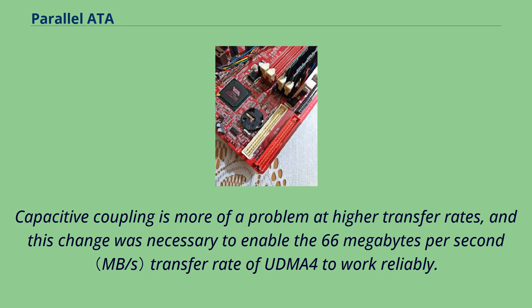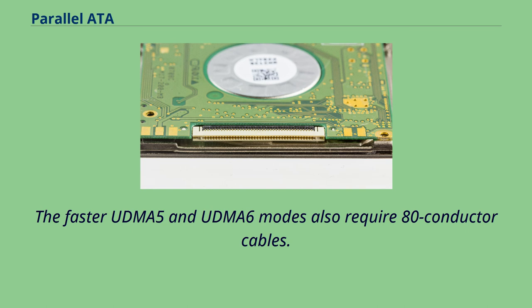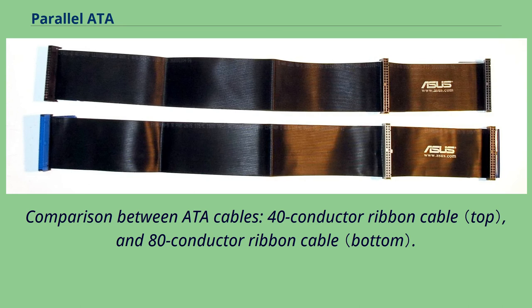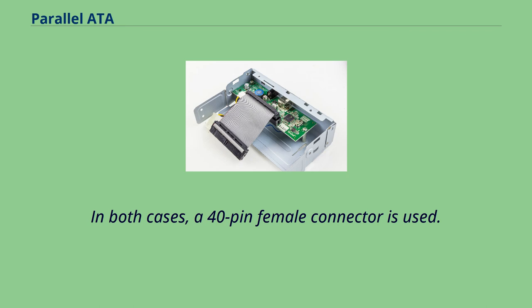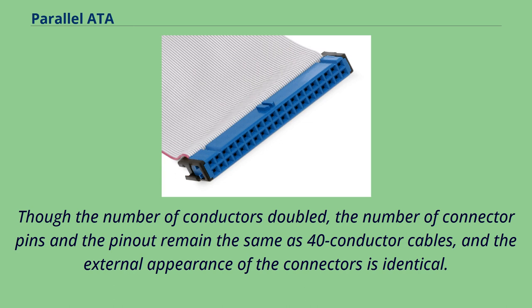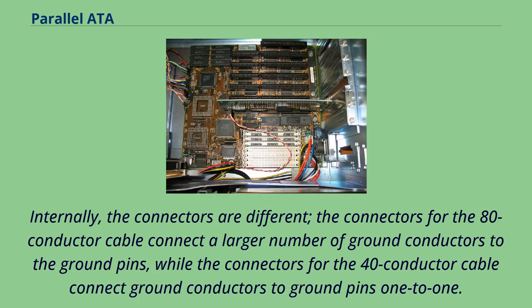This change was necessary to enable the 66 MB/s transfer rate of UDMA-4 to work reliably. The faster UDMA-5 and UDMA-6 modes also require 80-conductor cables. In comparing ATA cables, both 40-conductor and 80-conductor ribbon cables use a 40-pin female connector. Though the number of conductors doubled, the number of connector pins and the pinout remain the same as 40-conductor cables, and the external appearance of the connectors is identical. Internally, the connectors are different: the connectors for the 80-conductor cable connect a larger number of ground conductors to the ground pins, while the connectors for the 40-conductor cable connect ground conductors to ground pins one-to-one.